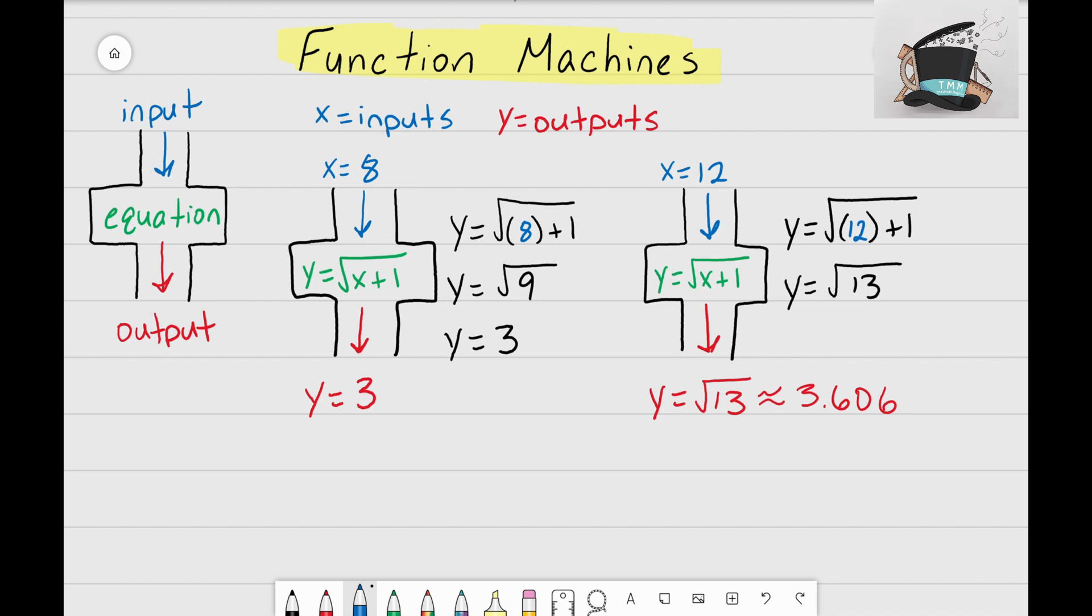Just to recap, we started with our inputs at the top. They were dropped into the same function machine where the equation was y equals the square root of x plus 1. We worked out our problems to the side by inputting those inputs and we found out our outputs were y equals 3 and y equals the square root of 13.